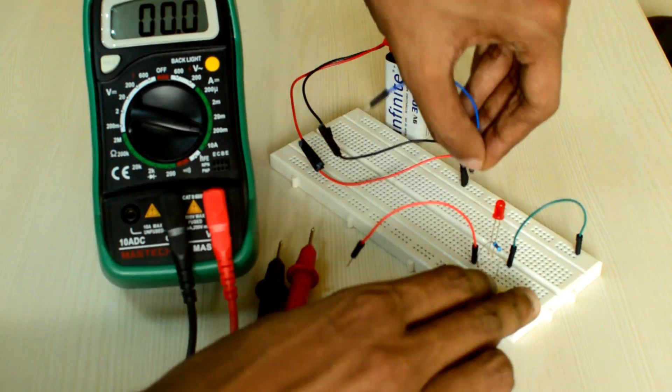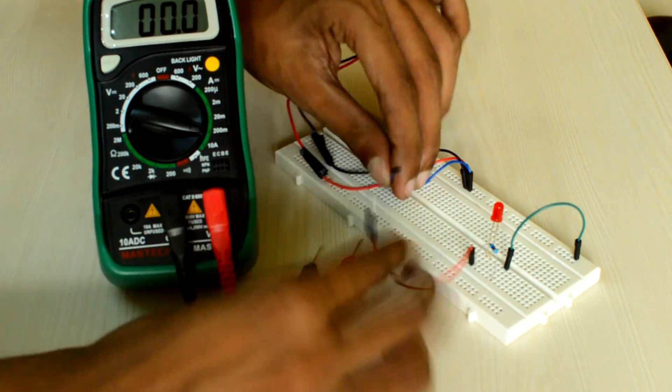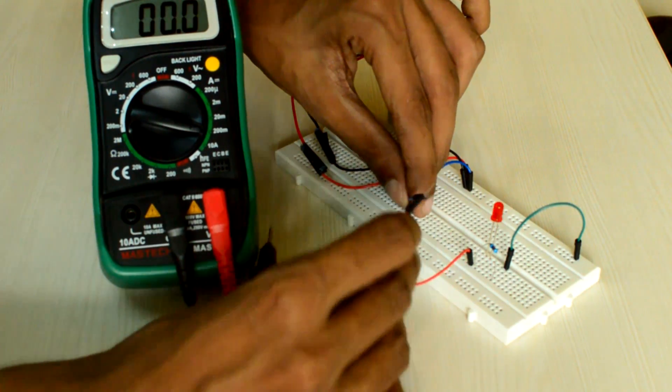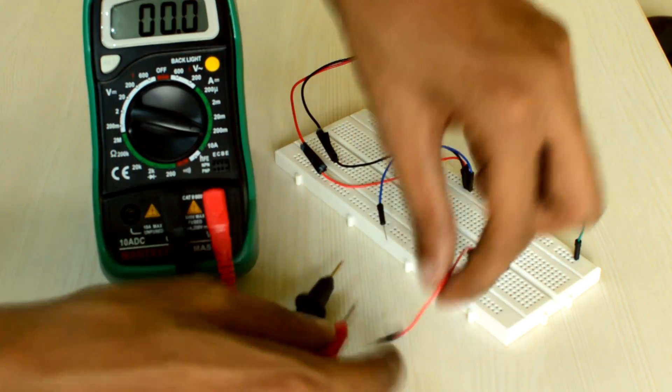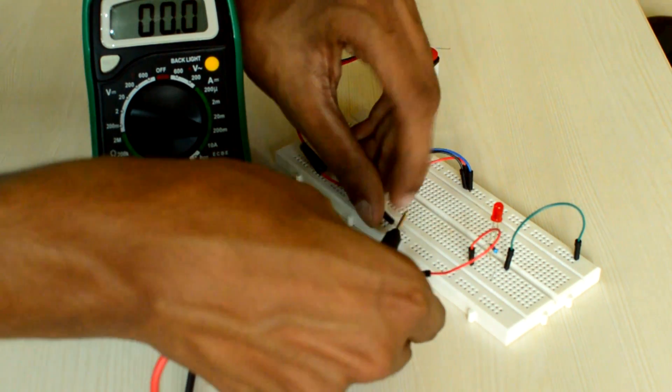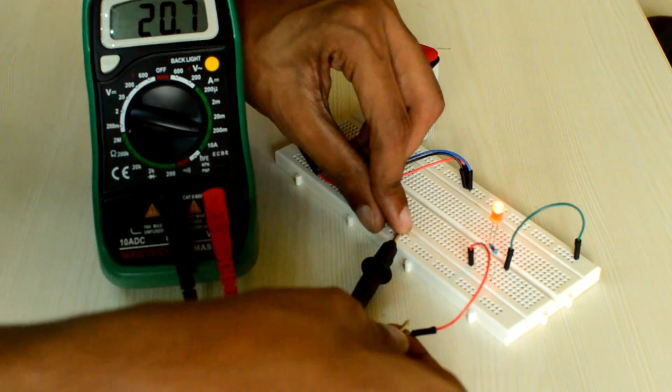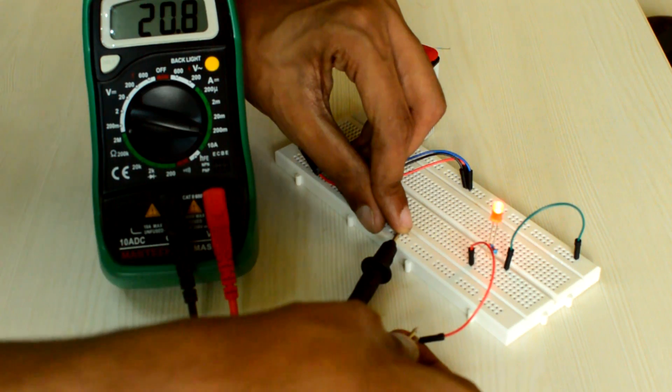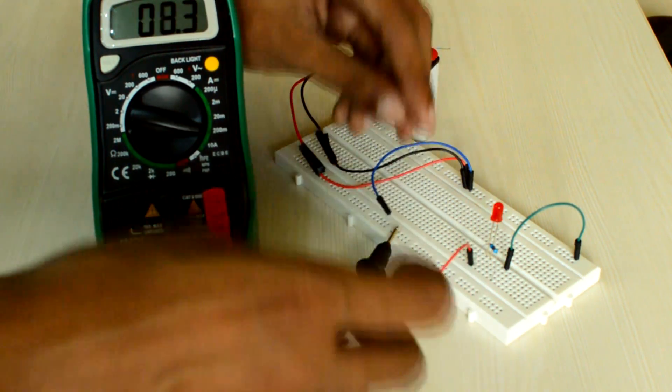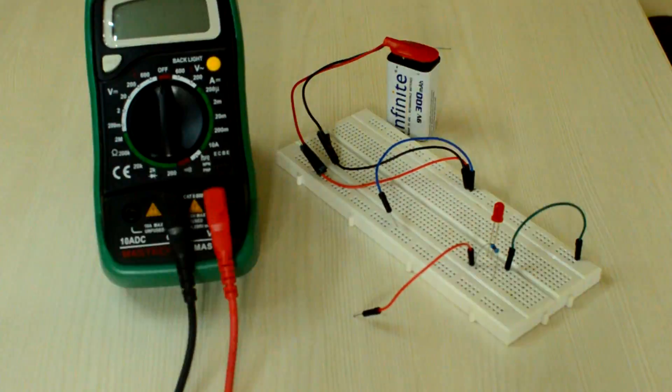So let us break the circuit first. Now the circuit is broken and as you connect these two wires, the circuit is complete. Let us connect the DMM now in series. As you can see, the current is approximately 20.7mA, pretty close to the 20mA theoretical value.